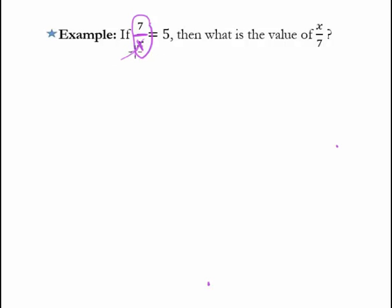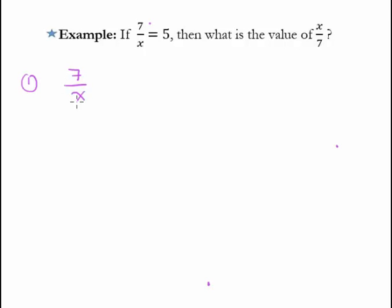Okay, let's read the question. If 7 over x equals 5, then what is the value of x over 7? Now, we could do this a couple of different ways. One way is we could say, I know that 7 over x is the same as 5, which is just the same thing as 5 over 1. Any number is itself over 1. And what do I have here? I have a nice proportion.